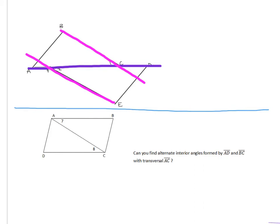All right, so we've got angle one and angle two. Are they interior, exterior, or corresponding? They're both on the inside of the coplanar lines, so that makes them interior. And they're on the opposite sides of the transversal, so they are alternate interior angles.